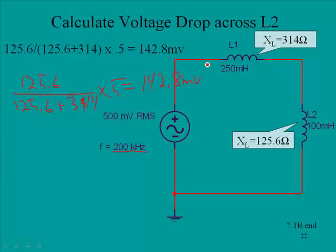Another way, the inductances are also proportional. We could have just said 100 millihenries over 100 plus 250 times 0.5, and we would have gotten the same value because this yields the same ratio.